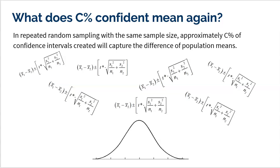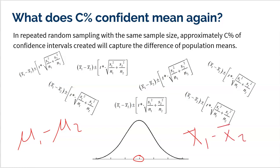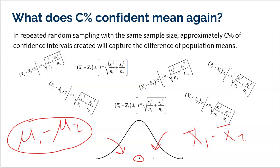Let me explain this again. When you have a sampling distribution, we can't fully construct it because we don't know the true difference. The true difference — population one mean minus population two mean — is smack dab in the middle of that distribution. We just don't know it. A sampling distribution represents all possible differences between sample means, with differences on either side, and the mean of all those differences should be the true difference.